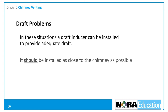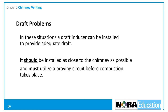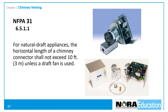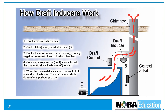The draft fan should be installed as close to the chimney as practical and must be electrically interlocked with the appliance utilizing a proving circuit before combustion takes place. NFPA 31 requires a draft fan when the horizontal length of the chimney connector is longer than 10 feet. On a call for heat, the control kit energizes the draft inducer, which forces airflow in the chimney, creating negative pressure in the flue pipe, heat exchanger, and combustion chamber. Once negative pressure is established, the control kit allows the burner to start. When the call for heat is satisfied, the control kit shuts down the burner, and the draft inducer shuts down after a post-purge cycle.